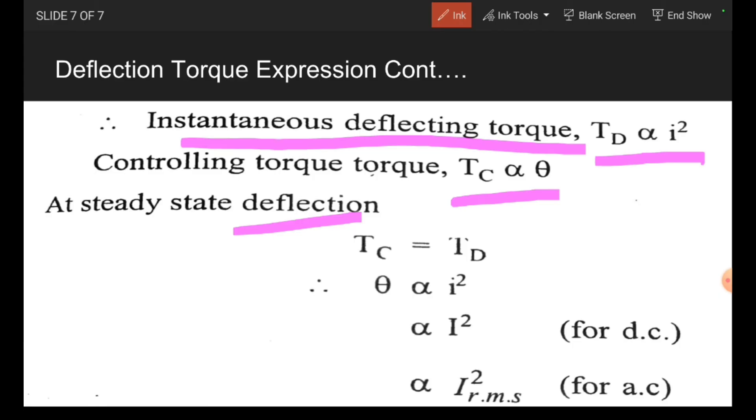At steady state condition, Tc equals Td, Td is proportional to I squared and Tc is proportional to theta. Then substituting here, this Tc is proportional to theta, Td is proportional to I squared. Therefore, theta is proportional to I squared.